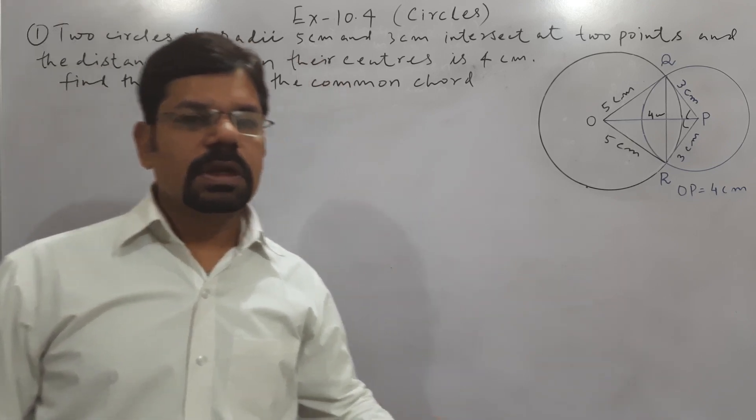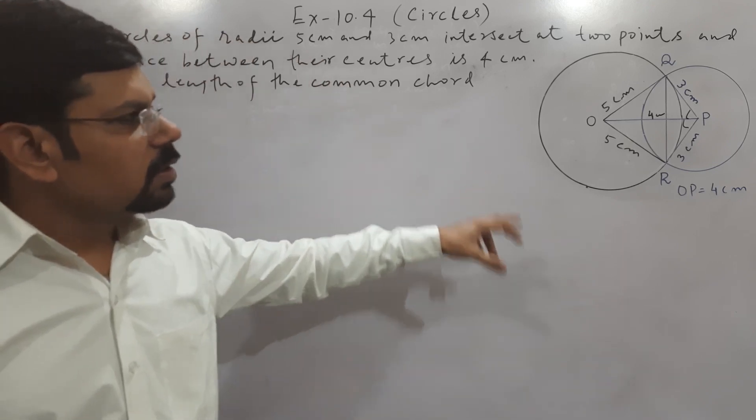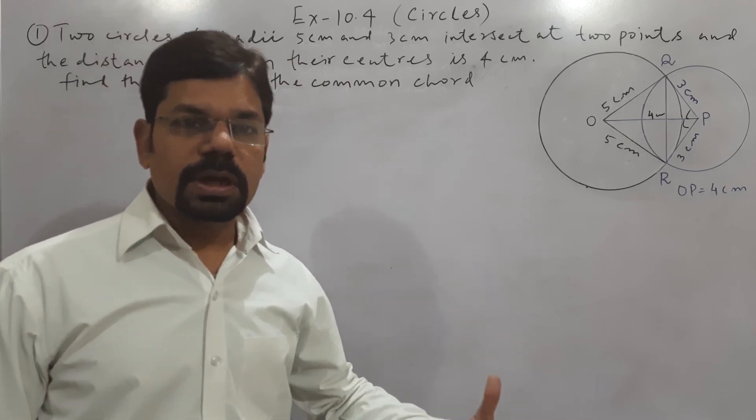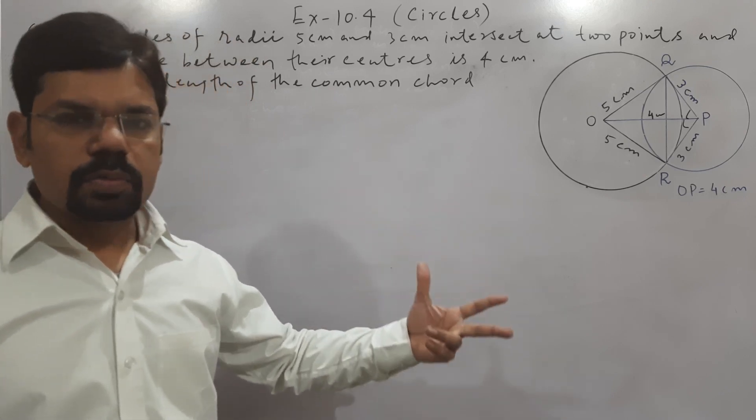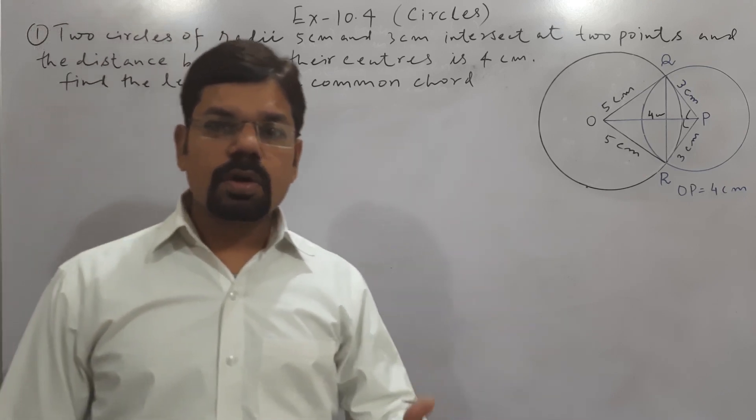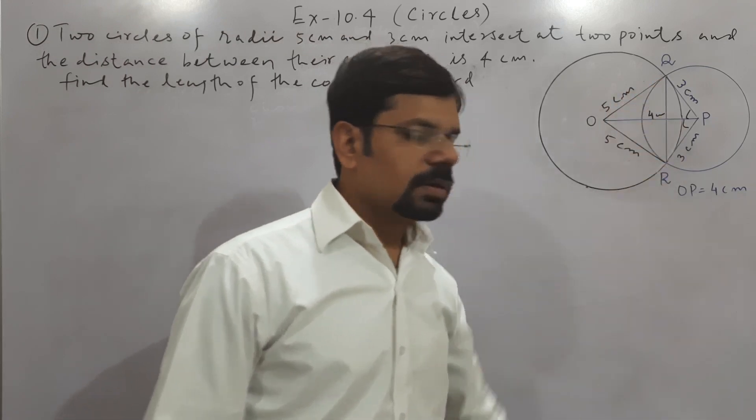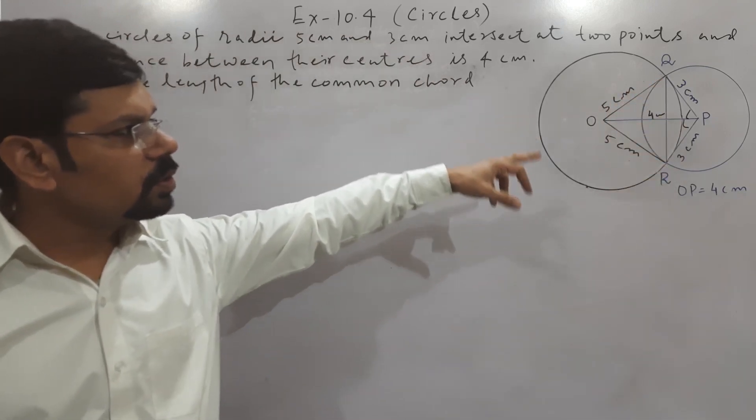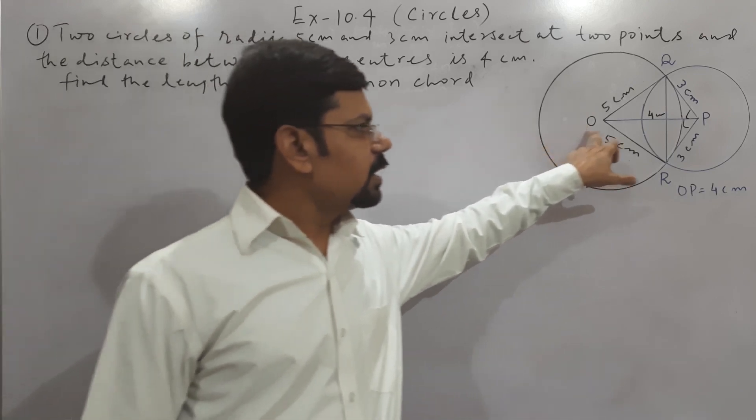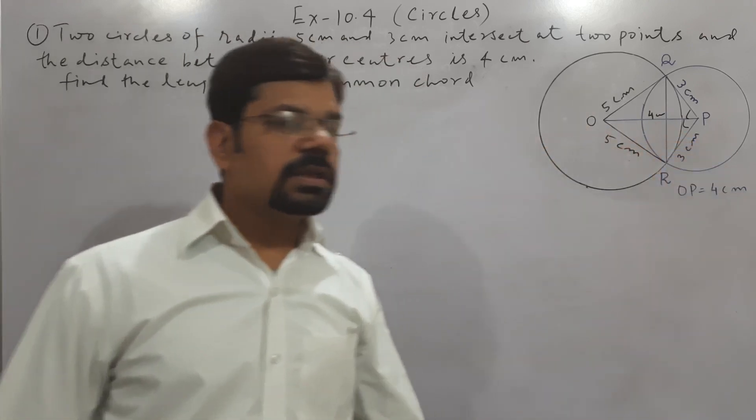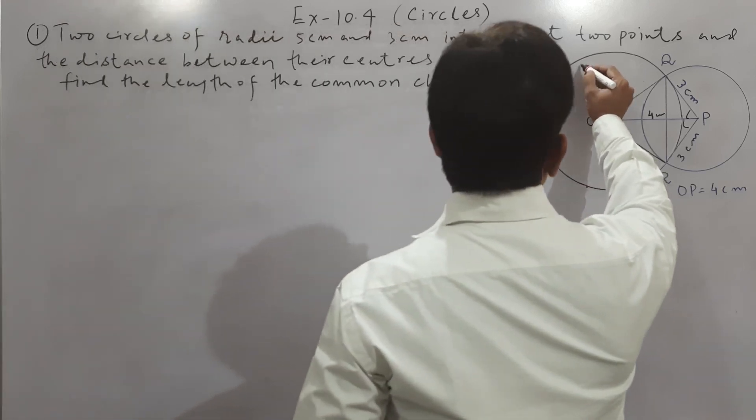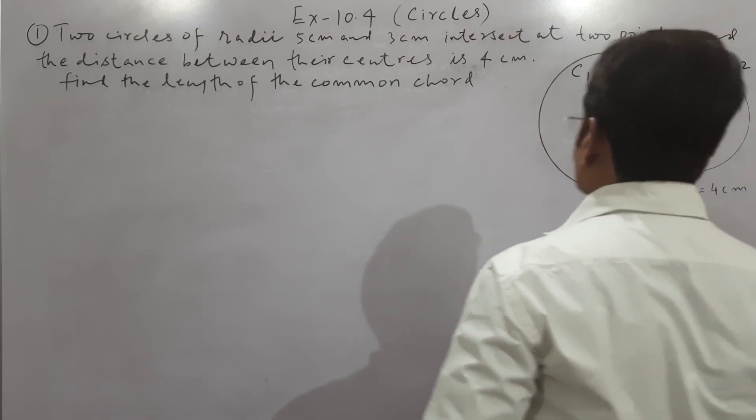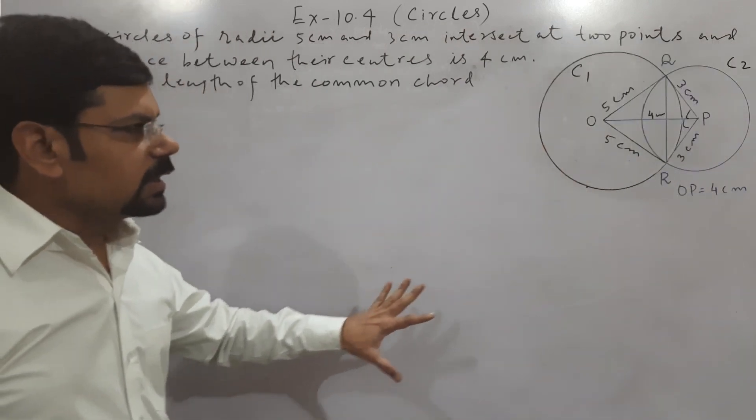there are two circles in which radius of one circle is 5 cm and radius of second circle is 3 cm. Both are intersecting each other at two points, and there is one common chord between them which is QR. So here you need to find out distance of this common chord QR. The distance between the two centers of circles is 4 cm. This is C1 circle we can assume and this is C2 circle we can assume. Now see here,